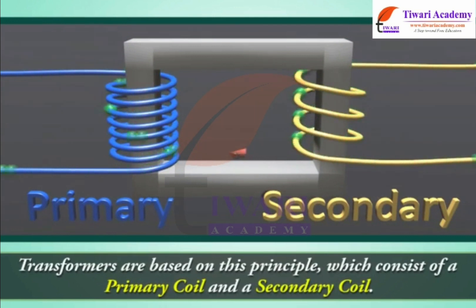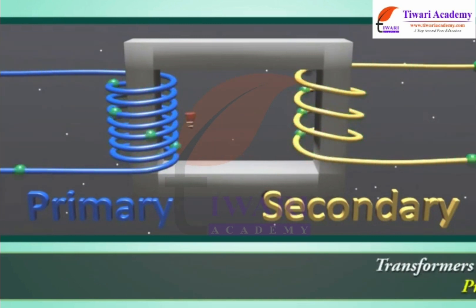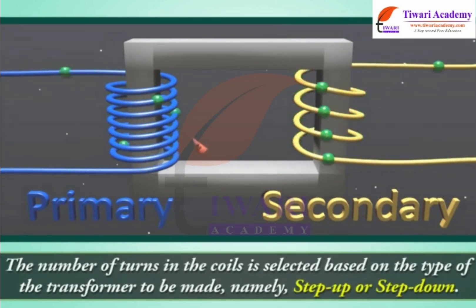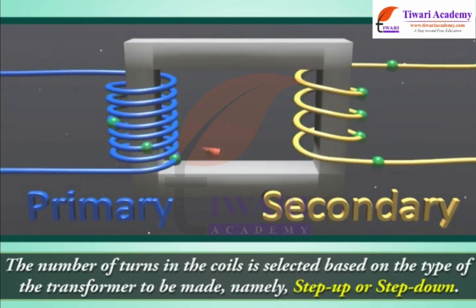Transformers are based on this principle, consisting of a primary coil and a secondary coil. The number of turns in the coils is selected based on the type of transformer to be made, namely step-up or step-down.